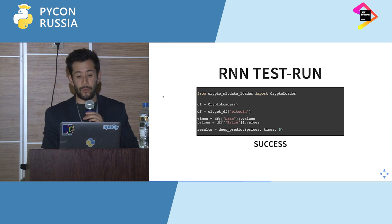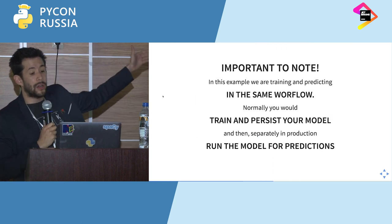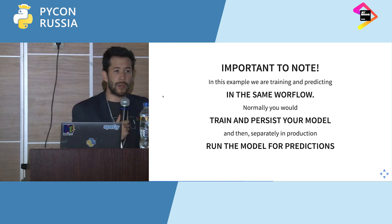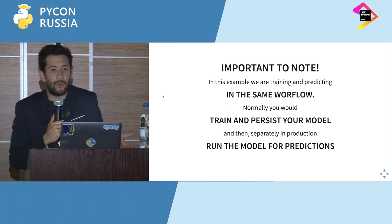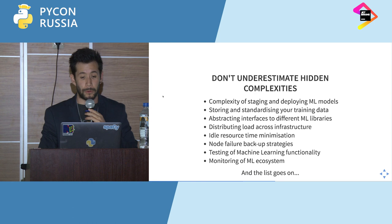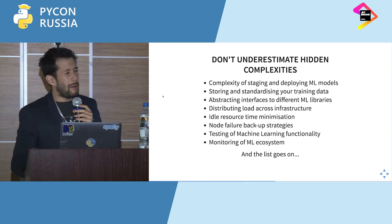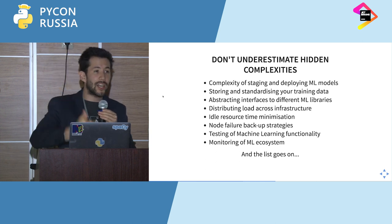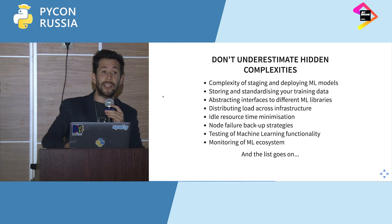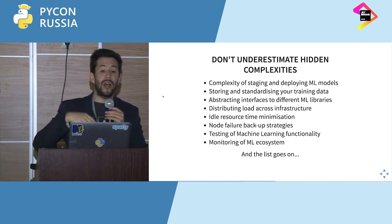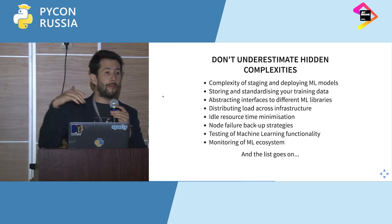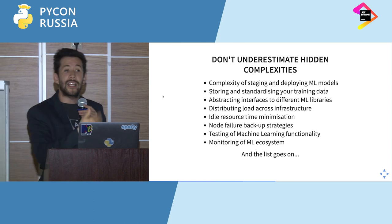It's important to note that in this specific case we're running the training and prediction in the same function. In practice, you would separate these two workflows: your data scientists create the models, they're happy with them, and then you deploy to production. It's also important not to underestimate hidden complexities — a lot of the times people build a machine learning model and think that's it. But there's a lot of complexity in staging and deploying models, storing data in standardized formats, abstracting interfaces for different machine learning libraries, distributing load across infrastructure, minimizing idle resource utilization, node failure backup strategies, testing, monitoring, and the list goes on.